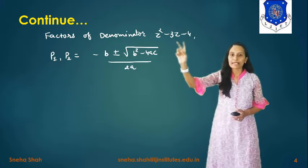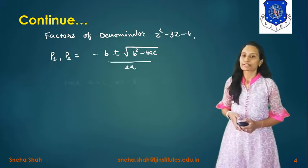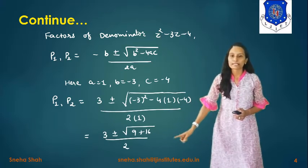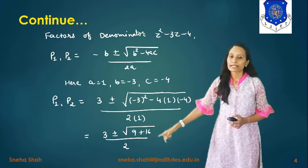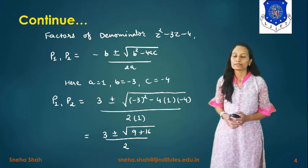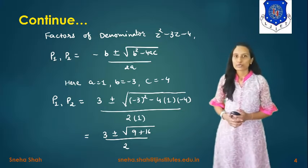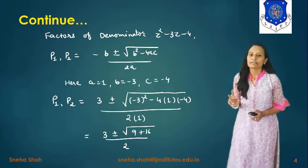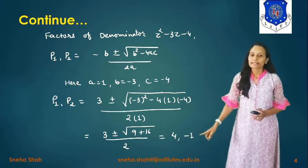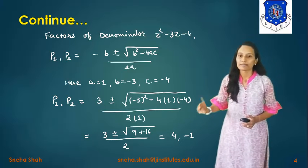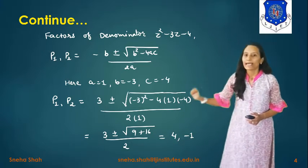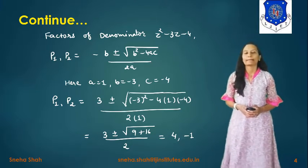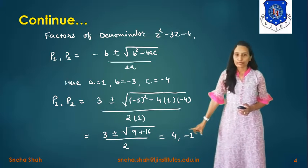Substituting the values into the quadratic formula: (3 ± √(9 + 16)) / 2 = (3 ± √25) / 2 = (3 ± 5) / 2. There are two roots: the first pole is (3 + 5)/2 = 8/2 = 4, and the second pole is (3 - 5)/2 = -2/2 = -1. So we have two poles: P1 = 4 and P2 = -1.